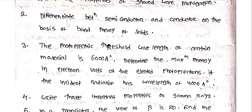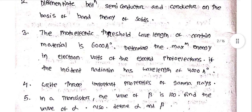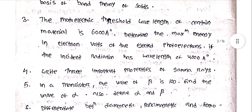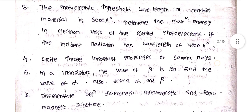Next: The photoelectric threshold wavelength of a certain material is 6000 Angstrom. Determine the maximum energy in electron volts of the ejected photoelectrons if the incident radiation has a wavelength of 4000 Angstrom.